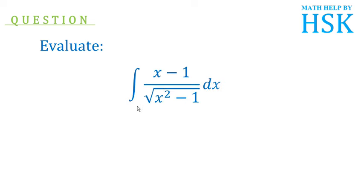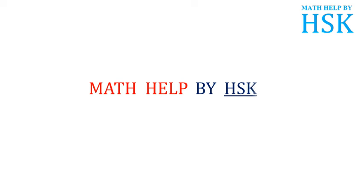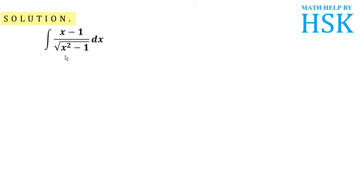The question is: evaluate the integral of (x minus 1) upon under root of (x squared minus 1) with respect to x. To solve this, I take the integral and find that no direct formula is right now applicable, and looking at the problem, I cannot suggest any method by which I can solve this question directly.